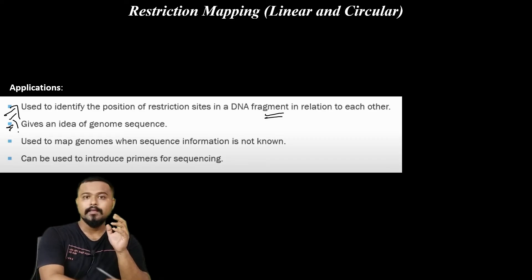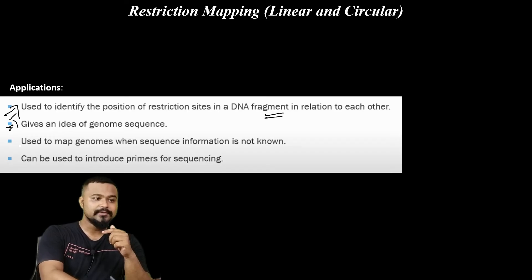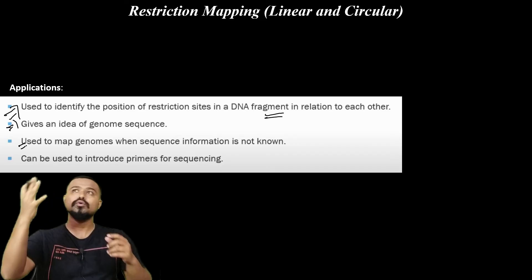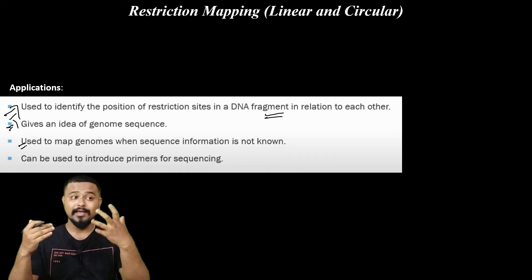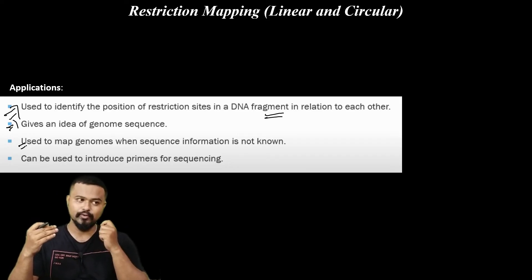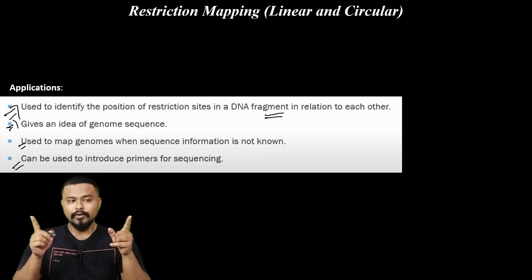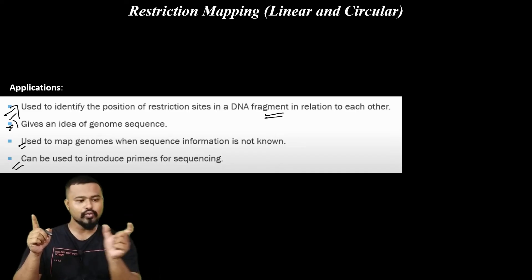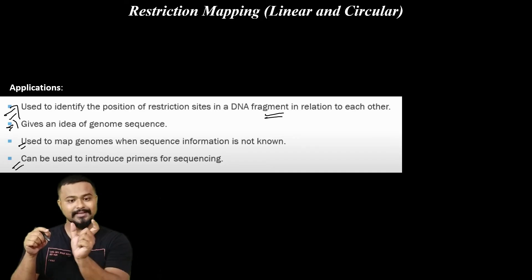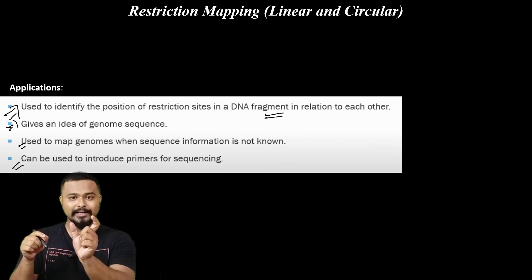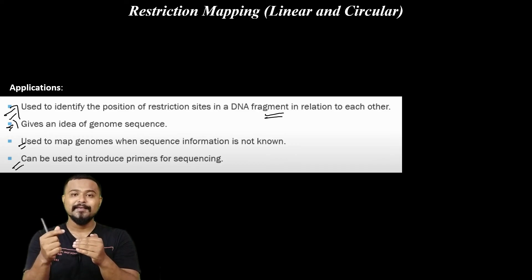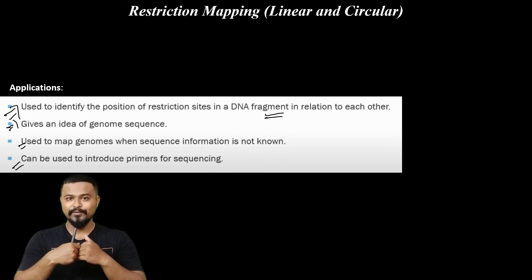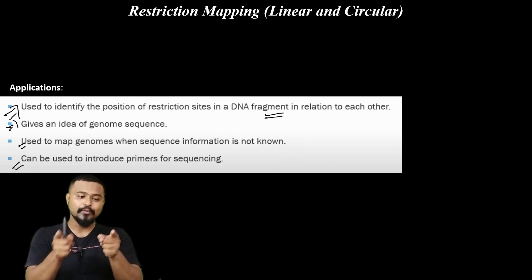Restriction mapping gives an idea of genome sequence. It is used to map genomes when sequence information is not yet known. If you don't have a complete organism sequence, restriction mapping helps. Additionally, restriction sites are used to design primers for sequencing. If you identify the restriction mapping sites, you can use those restriction enzyme sites to introduce primers and perform sequencing.